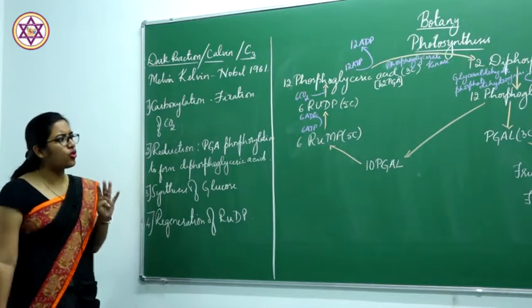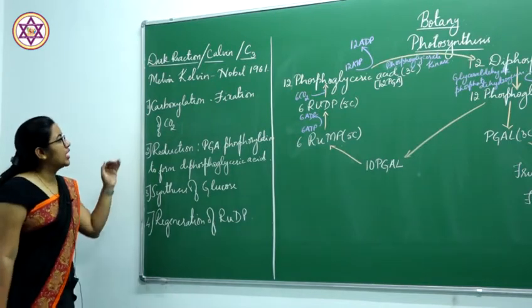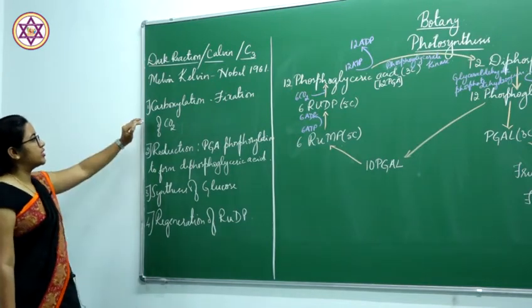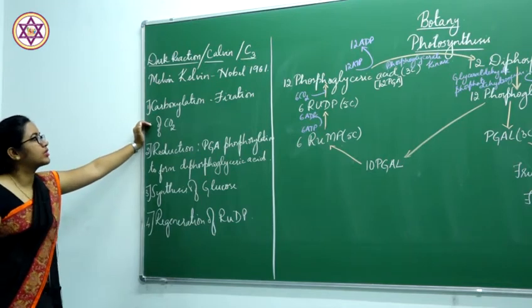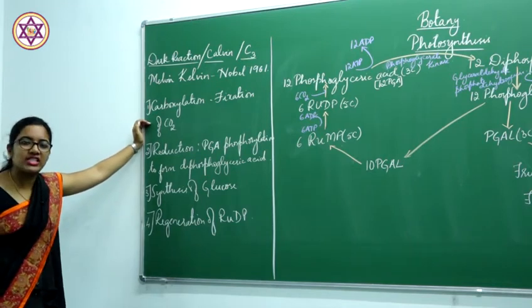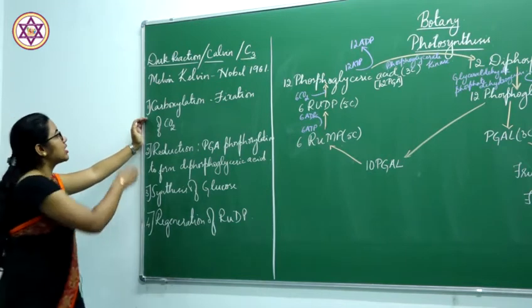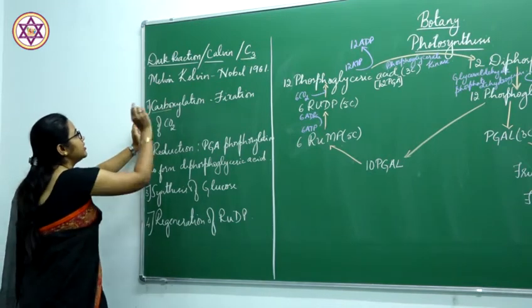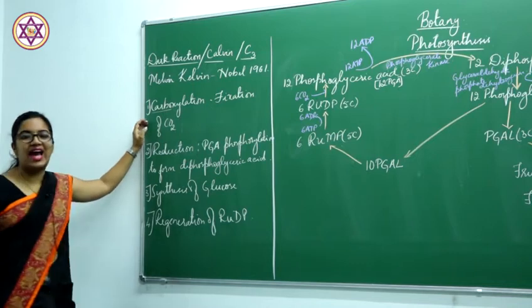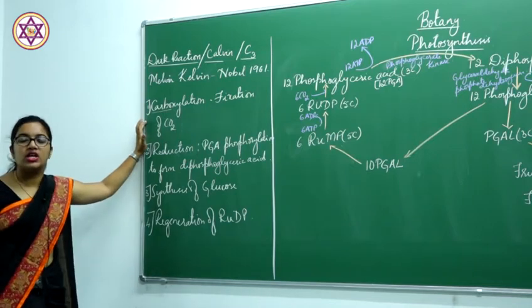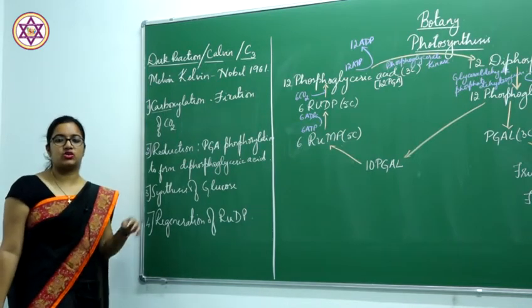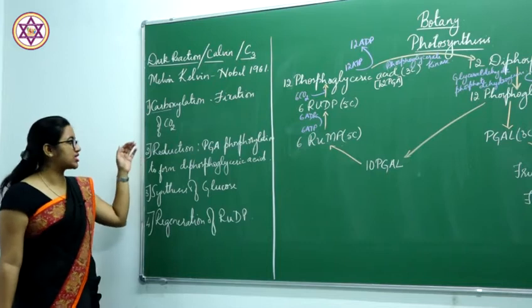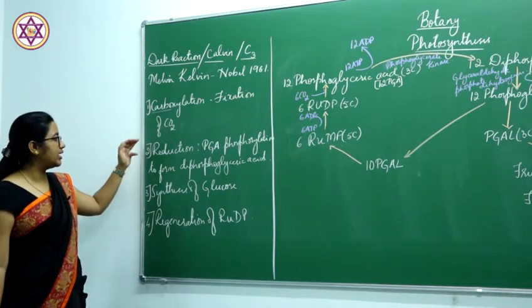Dark reaction requires temperature. It occurs in the stroma of the chloroplast in 4 steps. The first step is carboxylation.